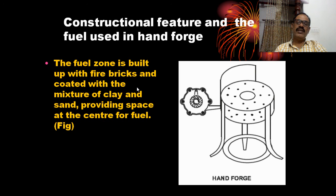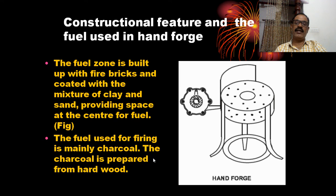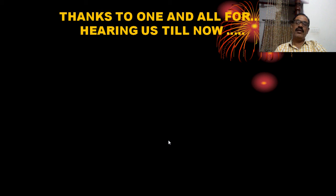The fuel zone of the hand forge is built up with fire bricks, coated with a mixture of clay, providing a space at the centre for fuel. The fuel zone is filled with charcoal. The charcoal is prepared from hardwood. This device is used for heating the soldering bit or copper bit. Both devices are used to heat the soldering bit or copper bit at the time of soldering.